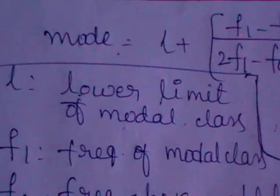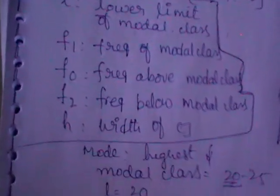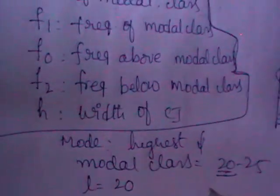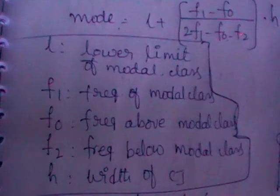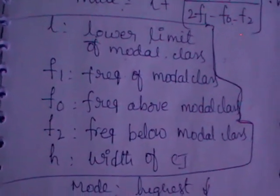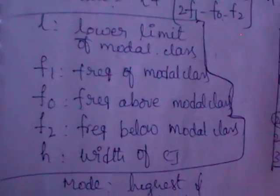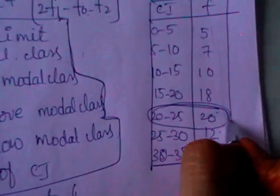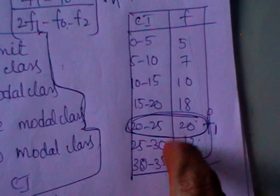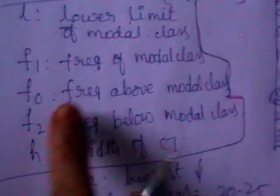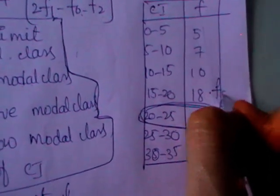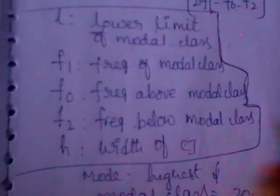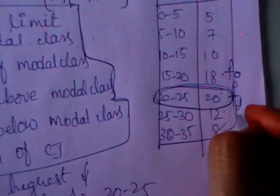L is nothing but the lower limit of the modal class. So L here is 20. After identifying L, F1 is nothing but the frequency of the modal class, so F1 is nothing but 20. F0 is the frequency above the modal class, which is nothing but 18. F2 is nothing but the frequency below the modal class.